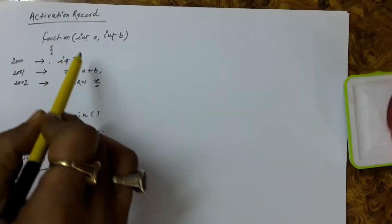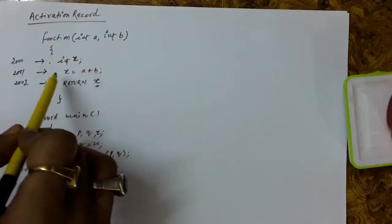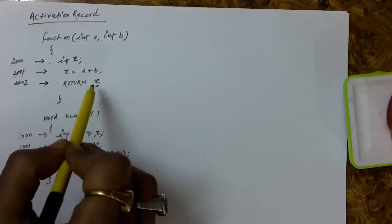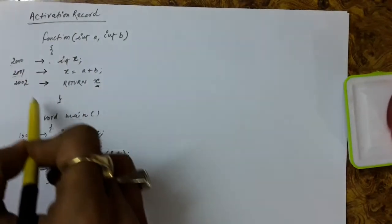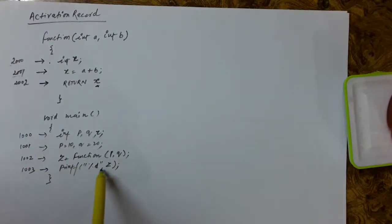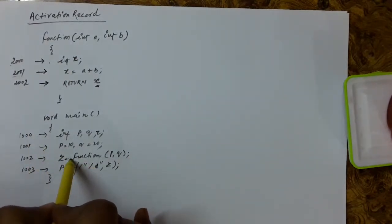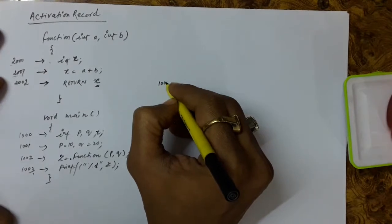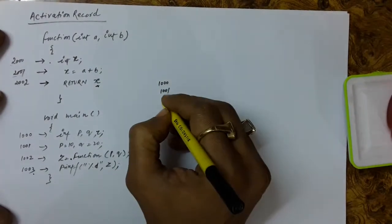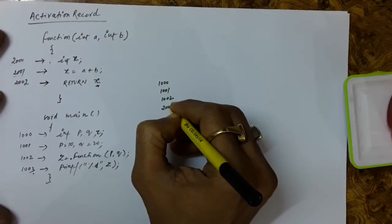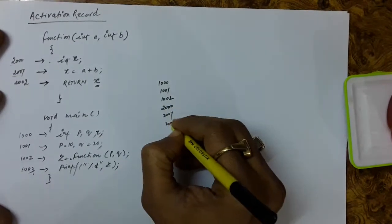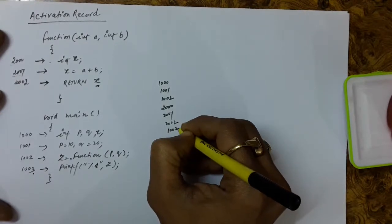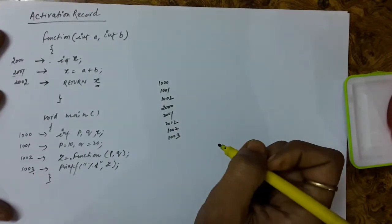The instructions of this function will be executed sequentially — this instruction, this instruction, and then this instruction. Since the last instruction is a return, the control will return to the function call. After this, instruction 1003 will be executed. So the order of execution is: instruction 1000, then 1001, 1002, after this 2000, 2001, and 2002, and then again coming back to 1002, and then 1003.